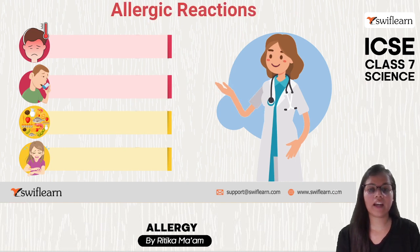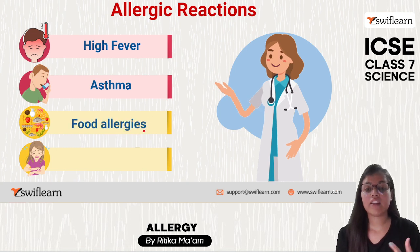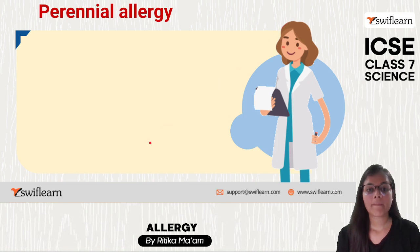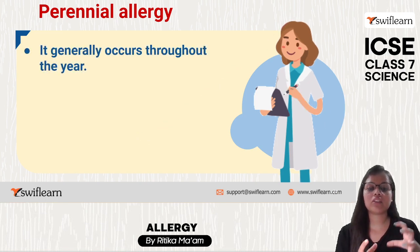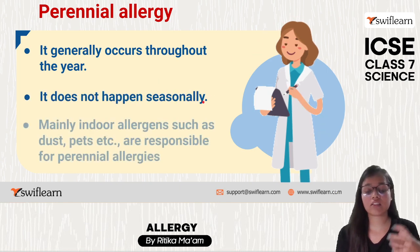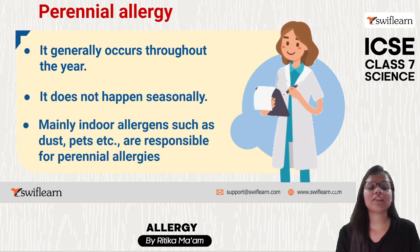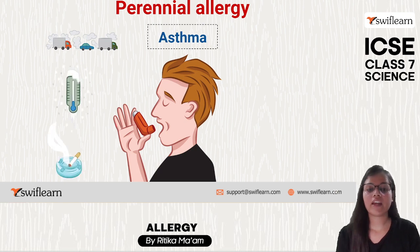Allergic reactions can include high fever, and sometimes it can lead to asthma, food allergies, or dermatitis. Perennial allergies are those that happen throughout the year — they do not depend on any season. These are generally indoor allergies, such as allergies due to dust or pets, and can include asthma, coughing, and sneezing.